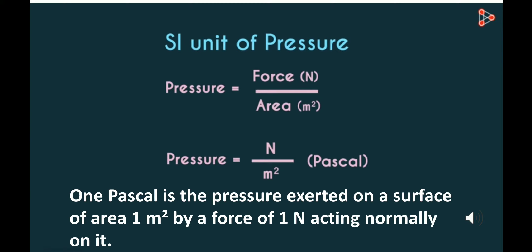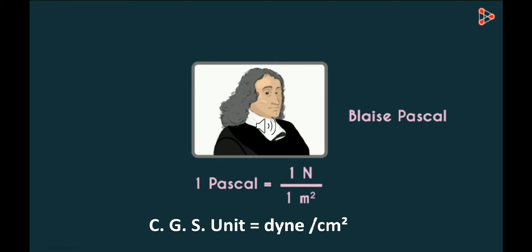The SI unit of pressure is Pascal — Newton per meter square. One Pascal is defined as the pressure exerted on a surface of 1 meter square by a force of 1 Newton acting normally on it. The unit is named after Blaise Pascal, who studied pressure. The CGS unit is dyne per centimeter square.